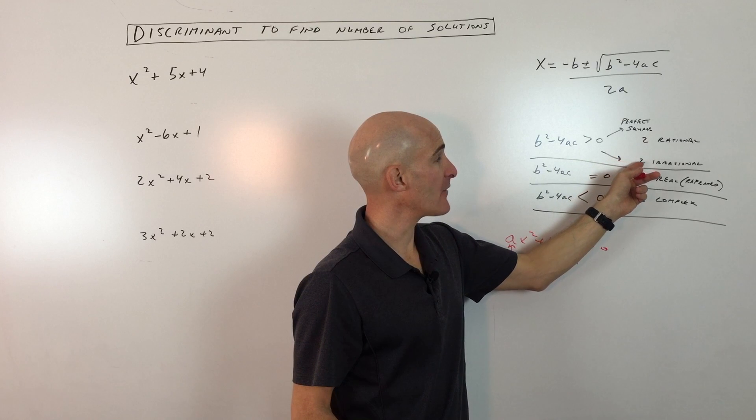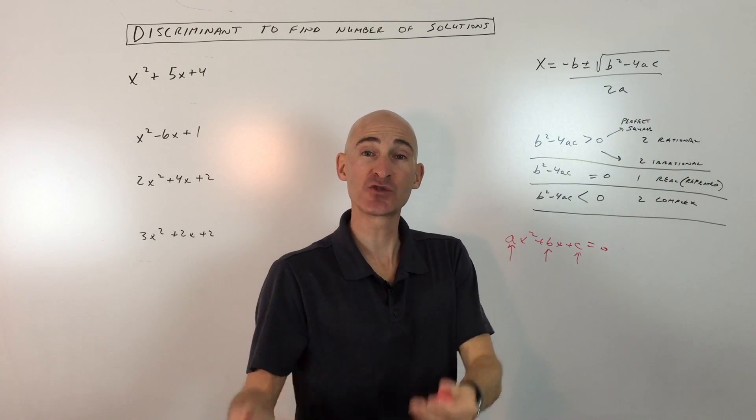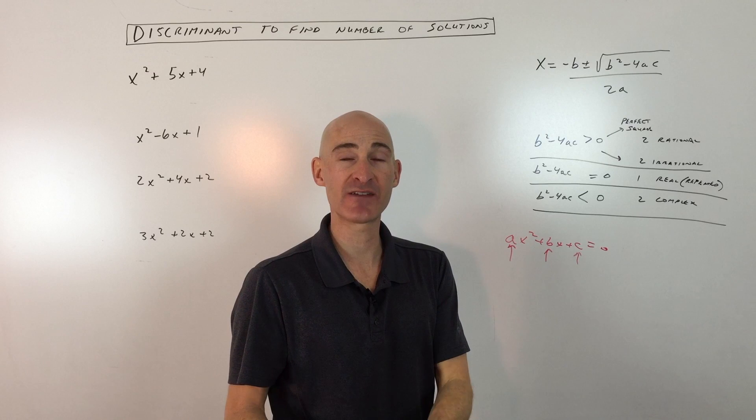If it's not a perfect square, you're going to have two real solutions, but they're going to be irrational, meaning like square roots that you can't simplify, like square root of 17 or square root of 21.